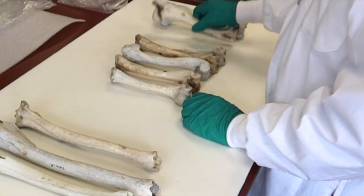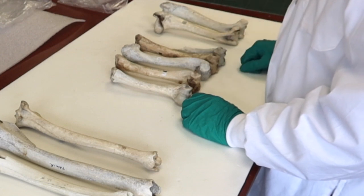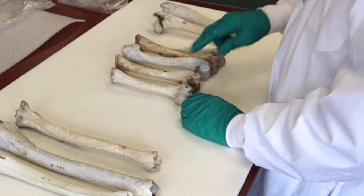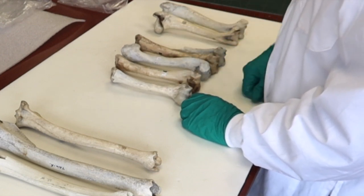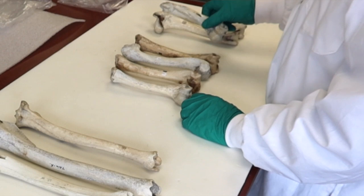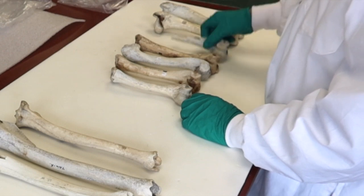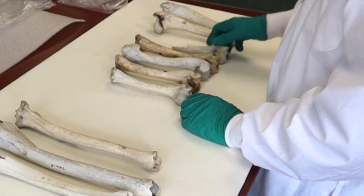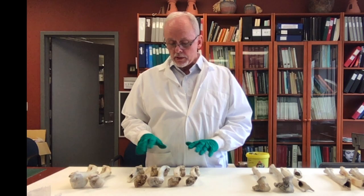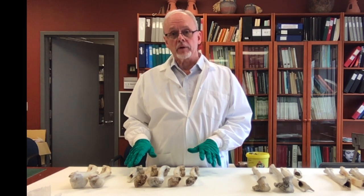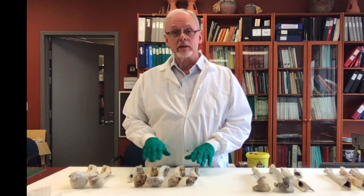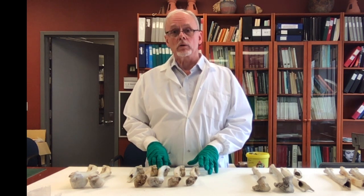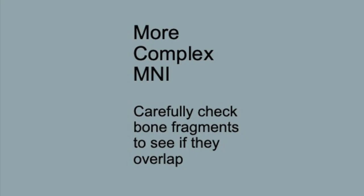We have only two right humeri, but we have four fairly complete left humeri and one distal, almost a half. So this tells us, using the simplest method of MNI, that there must have been at least five caribou. Some analysts use a more complex version of MNI.